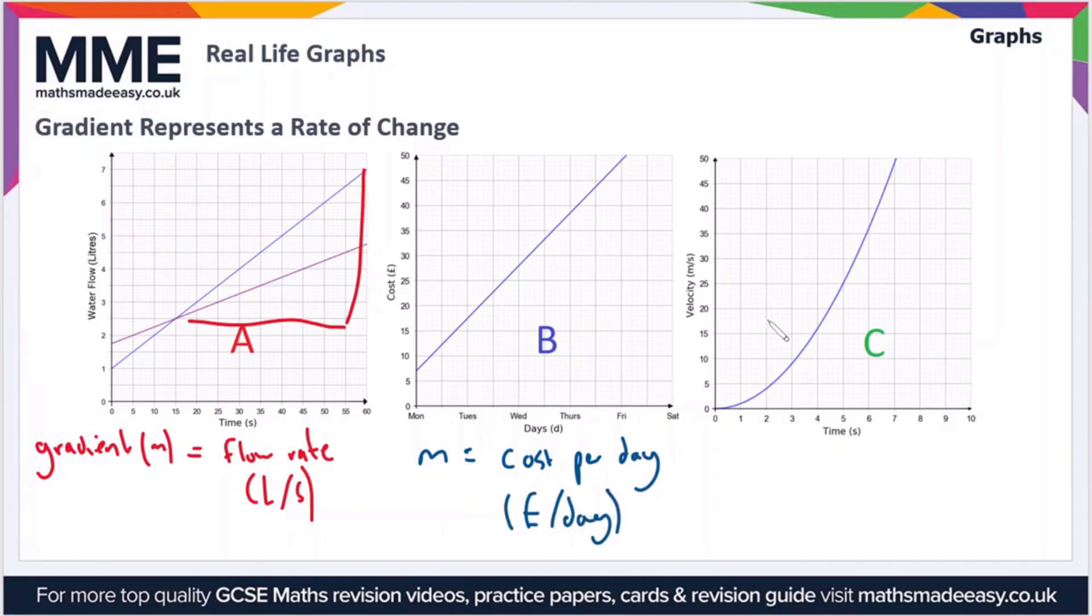So finally then, if we look at C, the gradient this time is velocity divided by time. Now if you know your formulas, acceleration is equal to velocity divided by time. So therefore M, or the gradient, is acceleration. Now the units for acceleration would be metres per second per second, or metres per second squared.